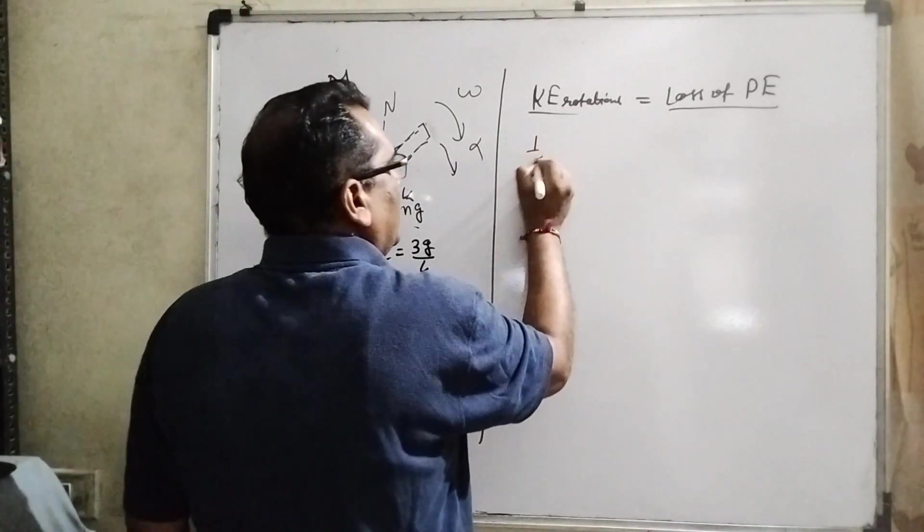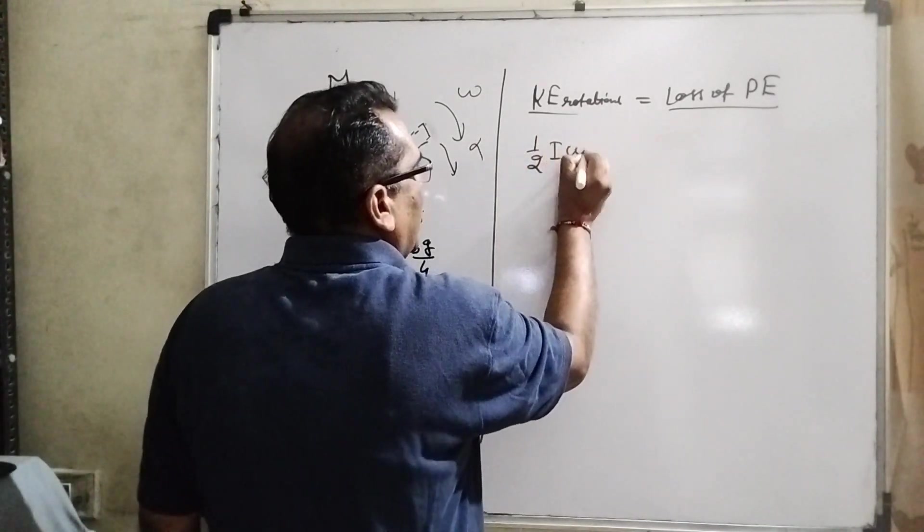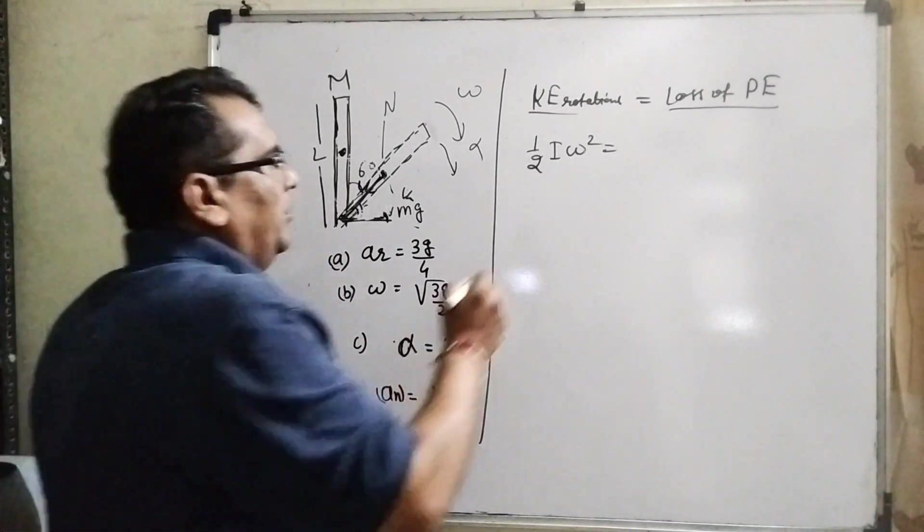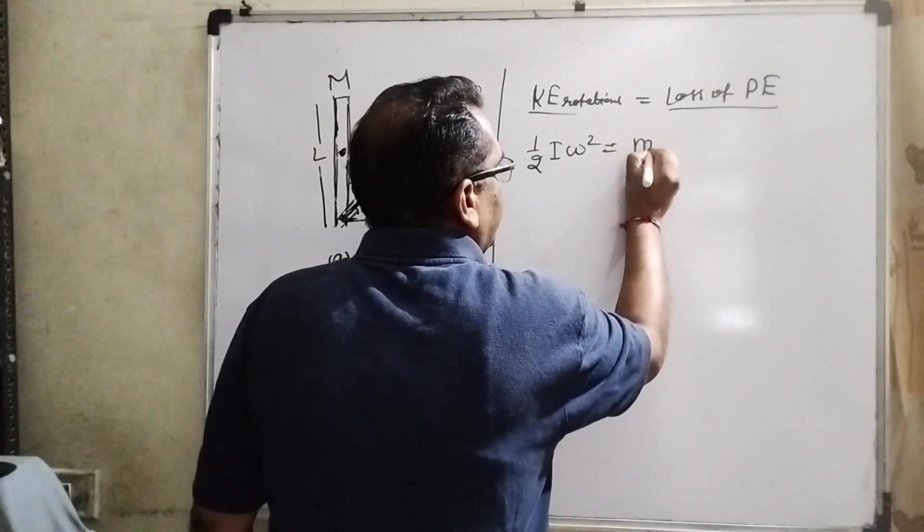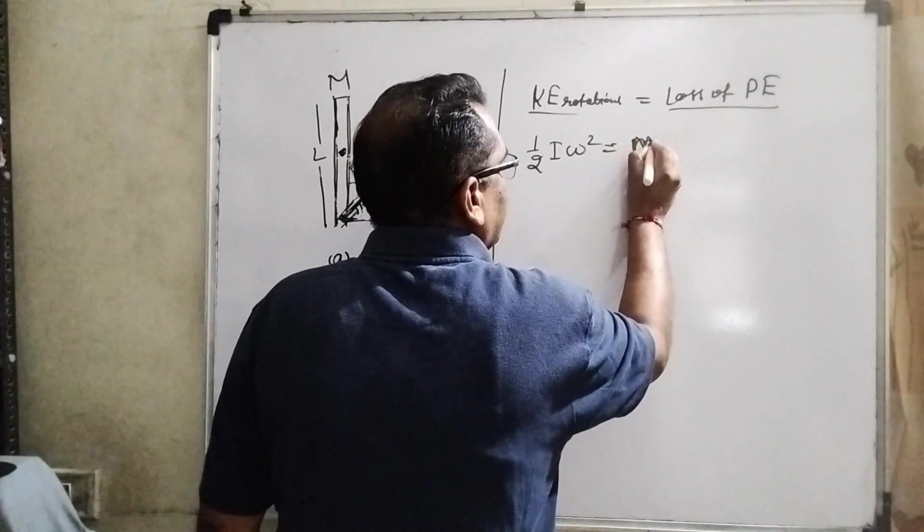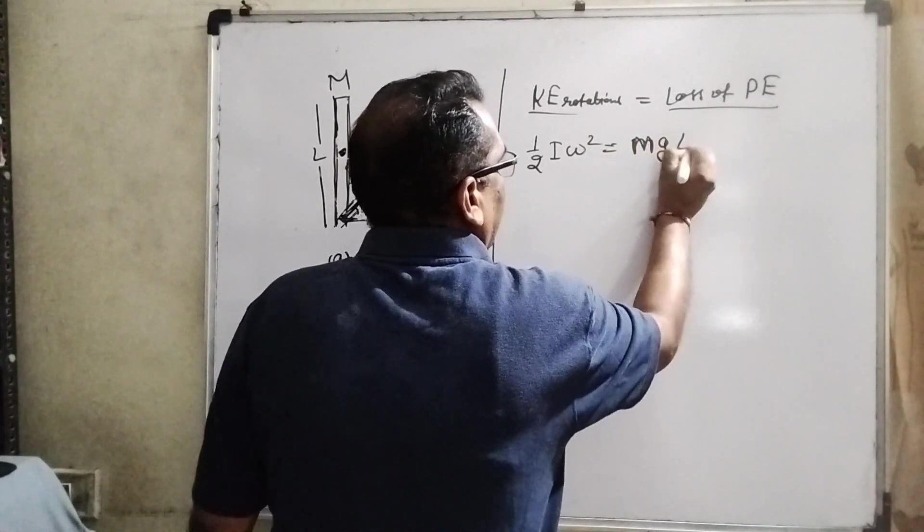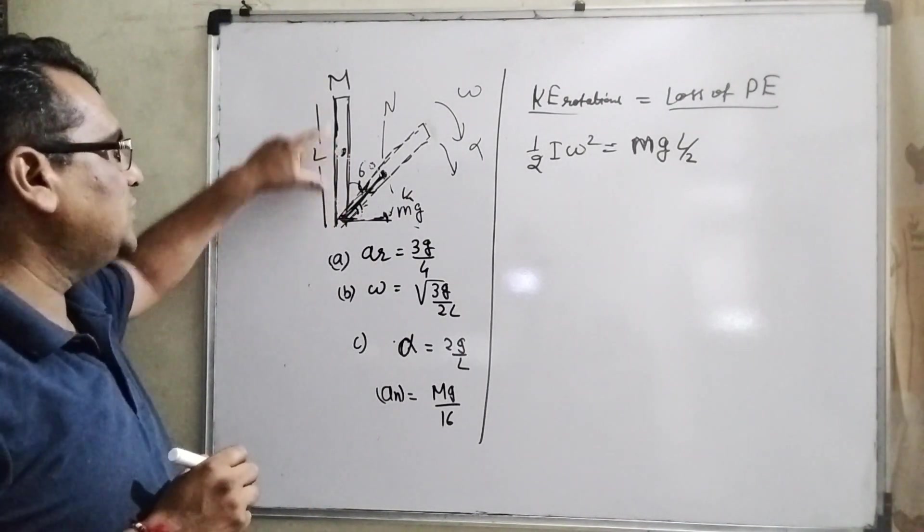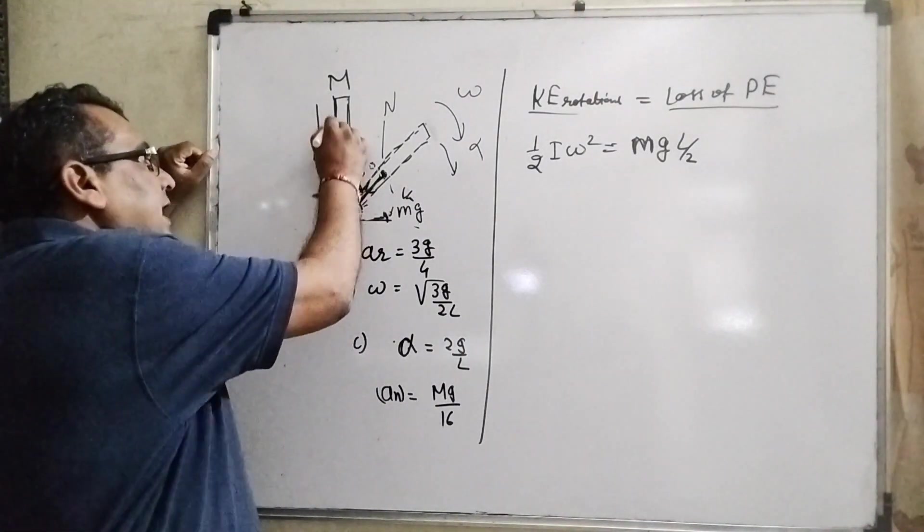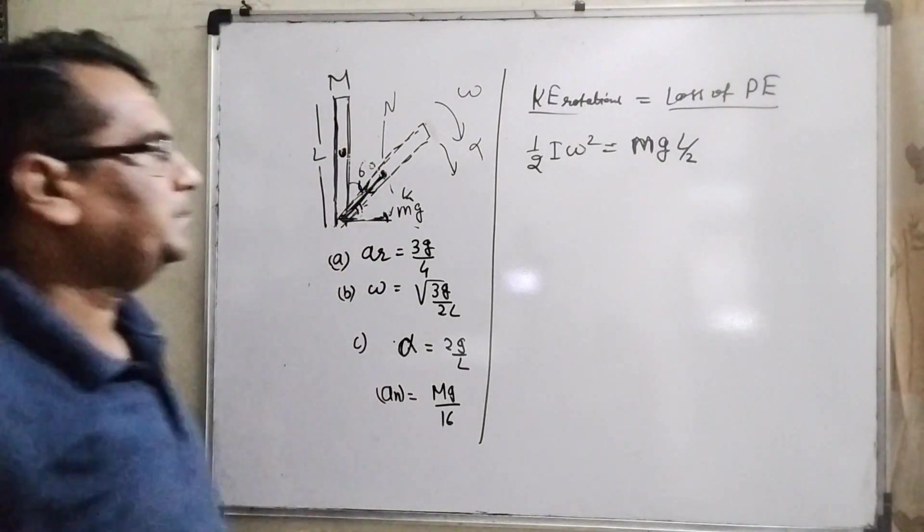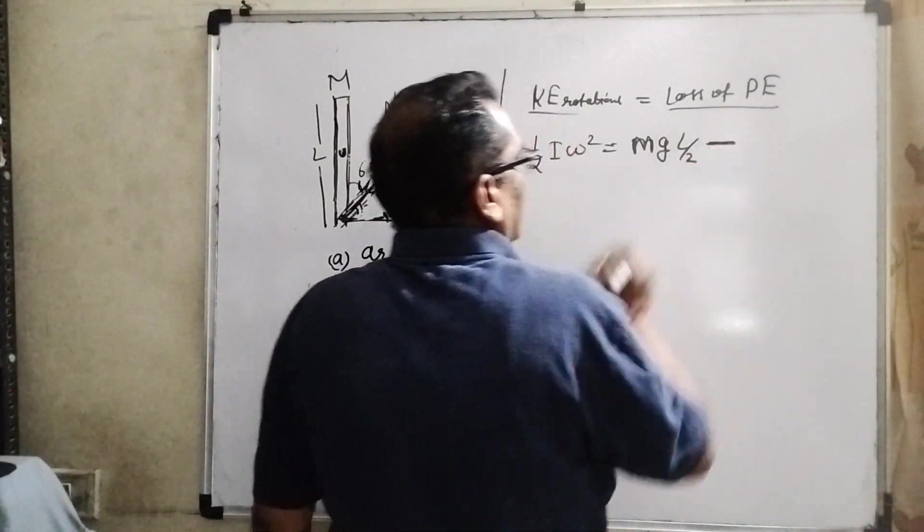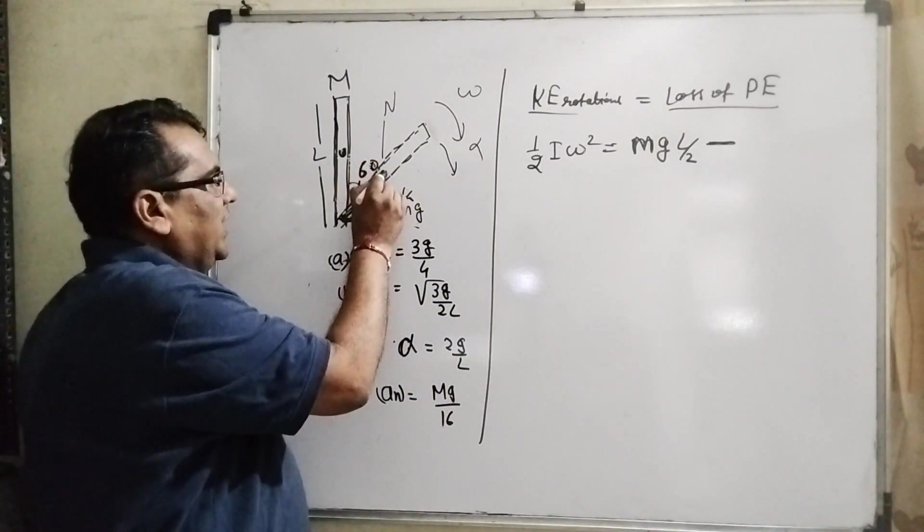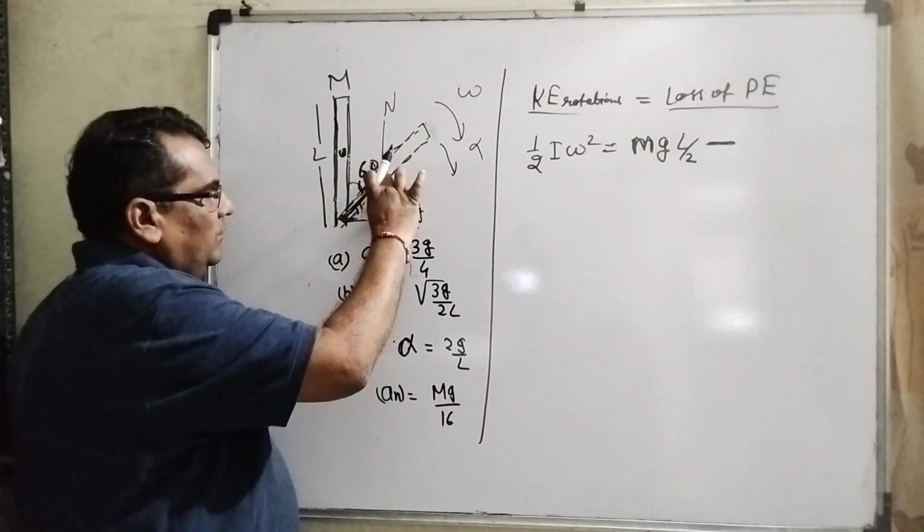What is the rotational kinetic energy? 1 by 2 I omega squared. And initial potential energy is M g, capital M g, and height. You can always take center of mass. What is the center of mass of this rod? L by 2. And minus after making 60 degrees.